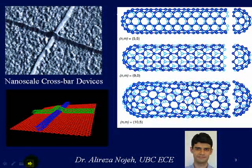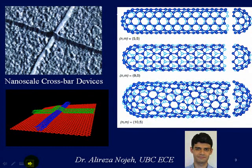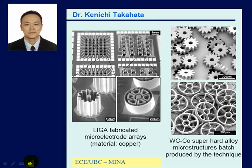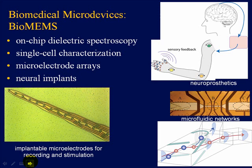Maybe they'll be like those of Ali Reza Noje, a professor of electrical and computer engineering at UBC, who has created transistors consisting of crossed carbon nanotubes. Increasingly, circuits also include mechanical devices, such as those developed by Dr. Kanichi Takahata. Circuits are also being inserted into the brain and interfacing with tissue. Here are some examples produced by Karen Chung in electrical engineering.